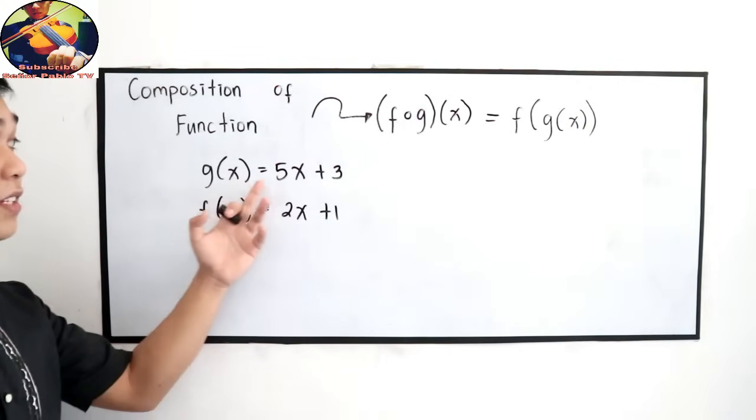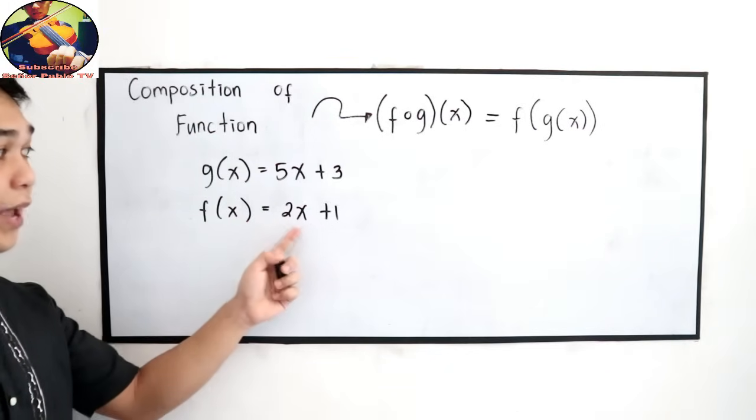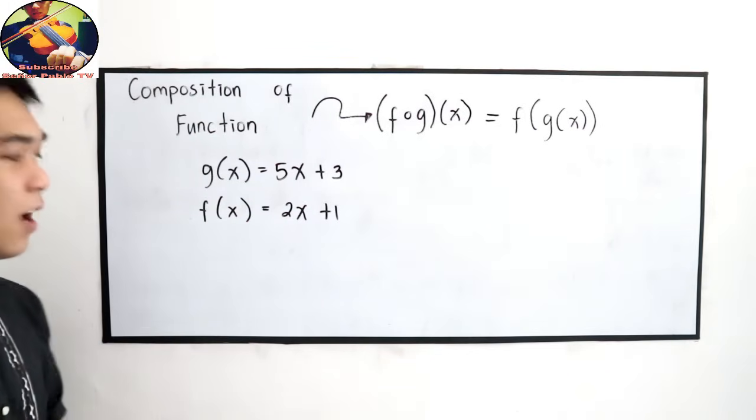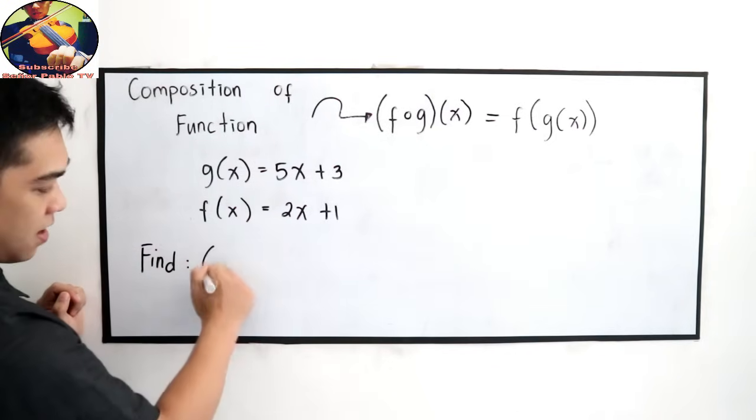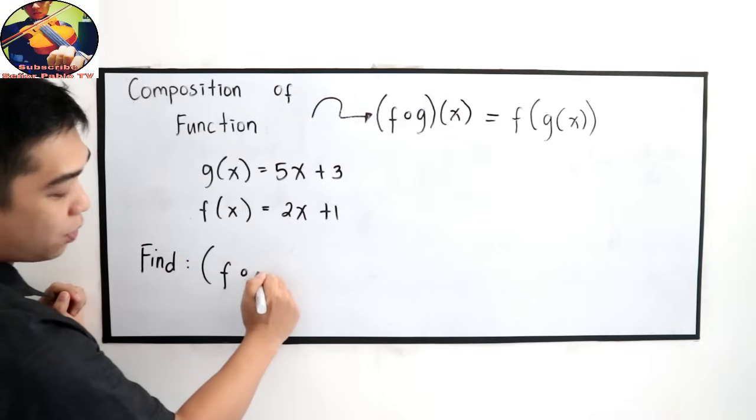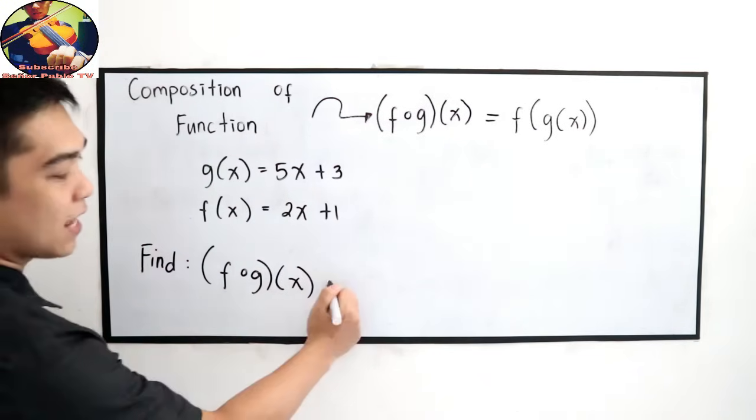Again, g of x is equal to 5x plus 3, and f of x is equal to 2x plus 1. Find f compose of g of x. Let's find it.